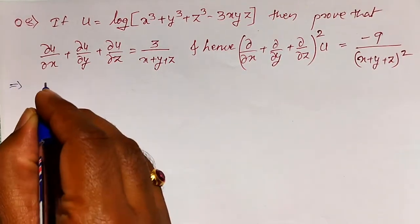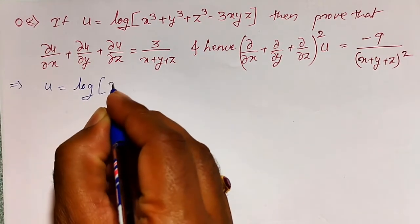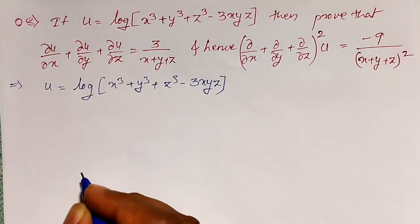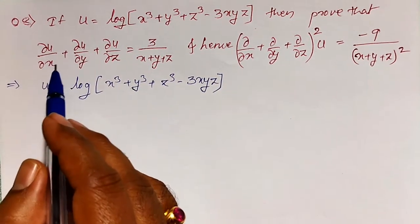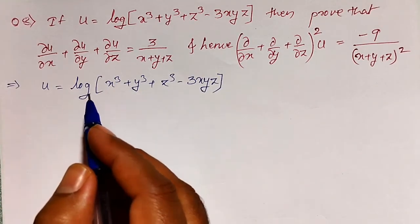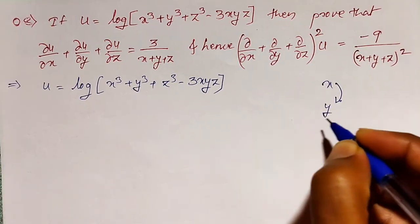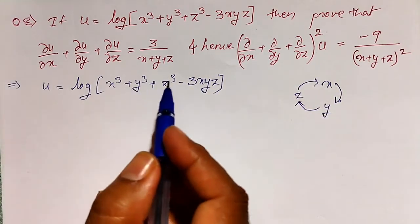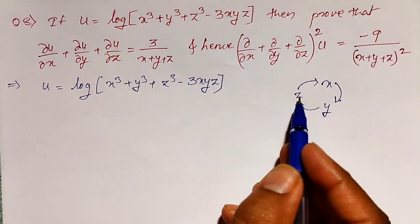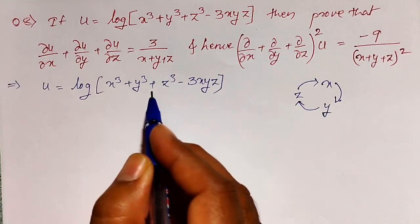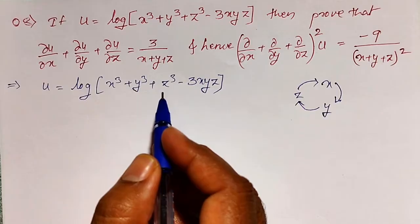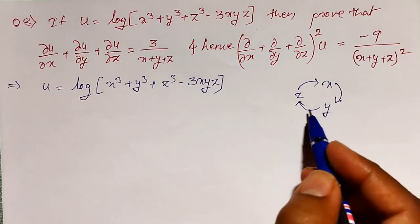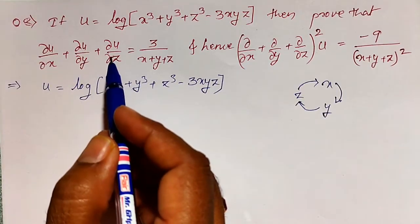Let me consider u equal to log of x cube plus y cube plus z cube minus 3xyz. Here, I have to find ∂u/∂x, ∂u/∂y, and ∂u/∂z. One thing you can observe: if we replace x by y, y by z, and z by x cyclically, the function remains the same. Such functions are called similarity functions. So, if we find ∂u/∂x, then by replacing x by y, y by z, and z by x, we can directly write ∂u/∂y and ∂u/∂z.